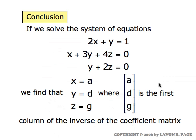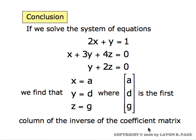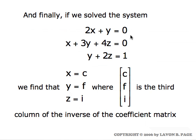To restate: solving this system gives x, y, z equal to a, d, g — the first column of the inverse of the coefficient matrix. If instead the right-hand side is 0, 1, 0, the solution is the second column of the inverse matrix. And if the right-hand side is 0, 0, 1, the solution is the third column of the inverse matrix.